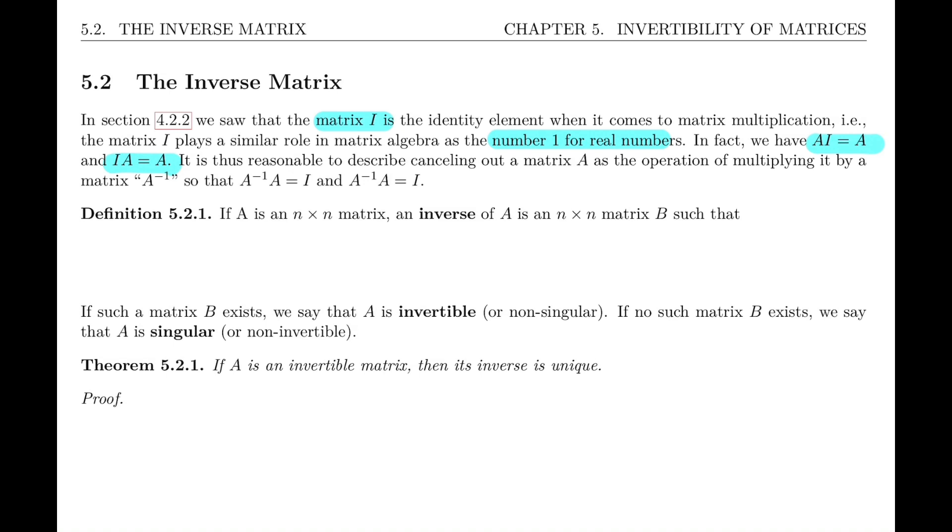So since I has the same role as the number 1, then we expect that whatever the inverse matrix is, when we multiply A by A inverse, we expect to get I. And same thing on the other side. Actually, here there's a little mistake in my notes. This should actually be A times A inverse equals I. In other words, this inverse matrix needs to work on both sides. And so that leads to the definition of an inverse matrix.